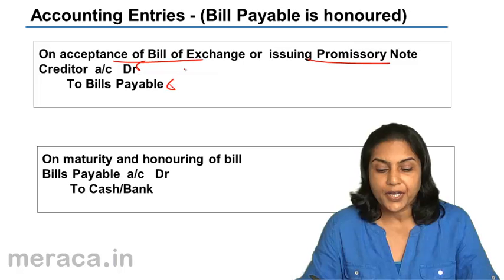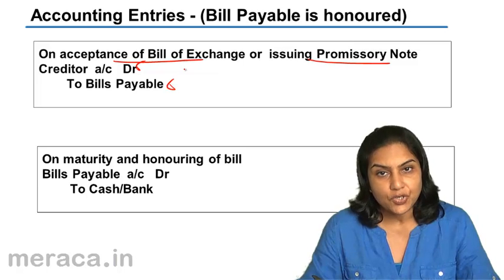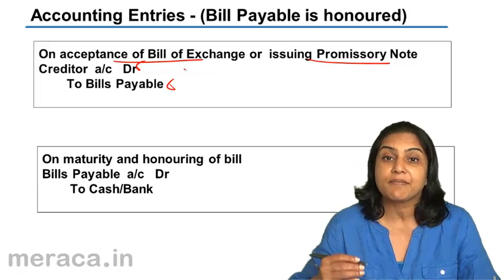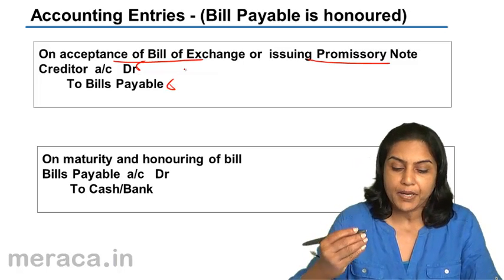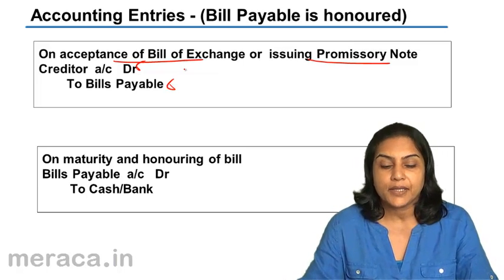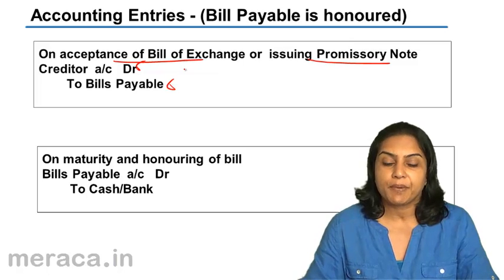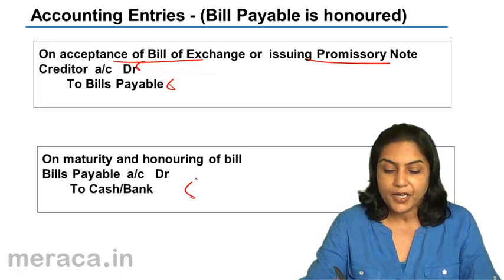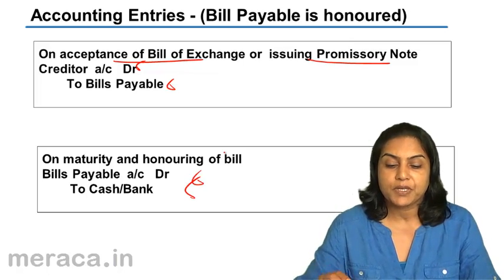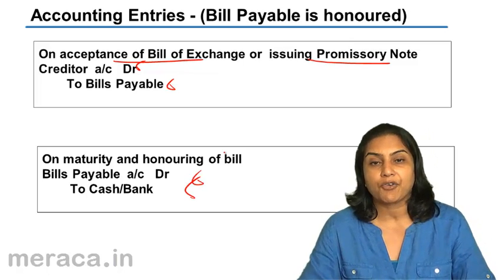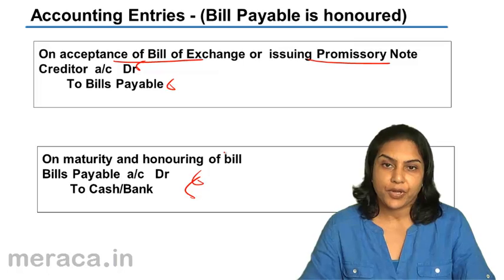On maturity, when the bill is honored — that is, he makes a payment on the bill — the entry would be: bills payable account debit to cash.